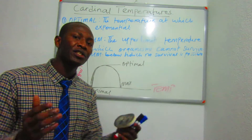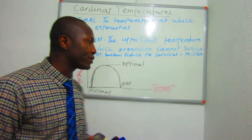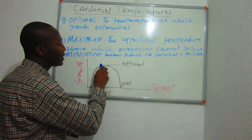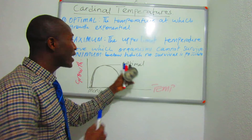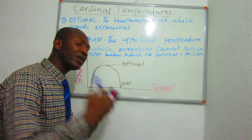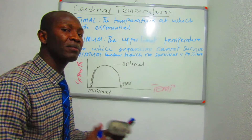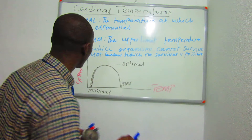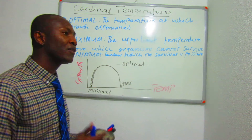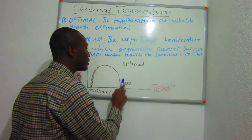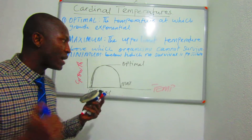Looking at the graph explaining these cardinal temperatures, we see the optimal temperature where life is at its maximum — organisms grow exponentially, showing logarithmic growth. That is the optimal temperature every species prefers for perfect growth and reproduction. The minimal temperature is the lowest point, below which there is no life. The maximum temperature is the point above which life becomes impossible. These are the three cardinal temperatures in biological studies: optimal, maximum, and minimum.